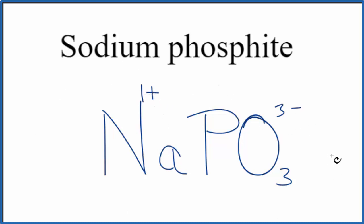So everything needs to add up to 0. So there's a little trick we can use to do that. We can take the 3 and move it down here with the sodium, and the 1 out here. We don't write the 1 by convention, and that leaves us with Na3PO3 as the formula for sodium phosphite.